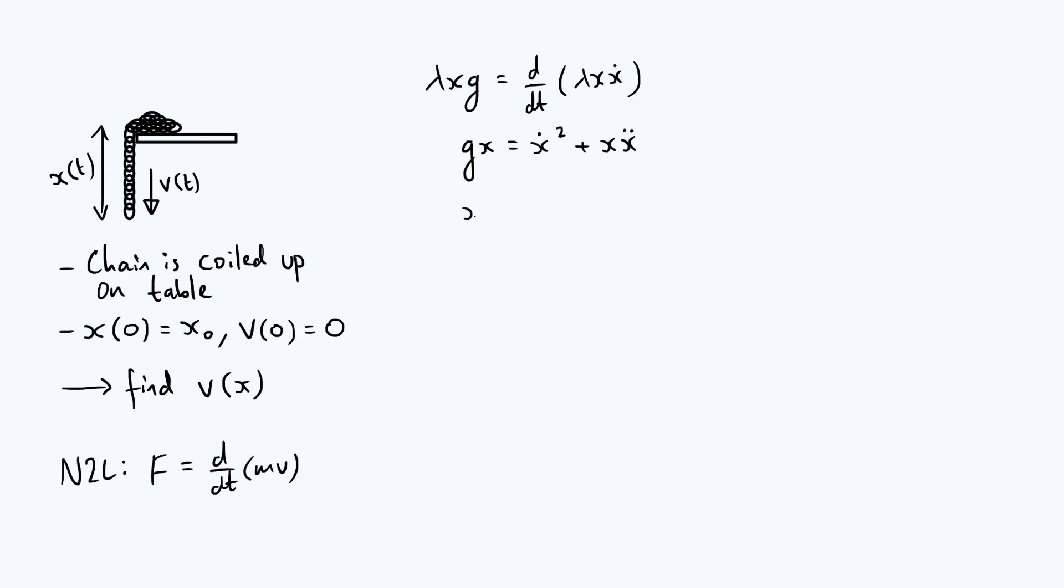So the trick I'm talking about involves the acceleration term, the ẍ. Now ẍ is the second derivative of x, or equivalently it's the first derivative of ẋ with respect to time. Now I'm going to apply the chain rule to that definition and write it as dẋ/dx and then times dx/dt, so that you can imagine the dx is cancelling. But dx/dt, this bit here, is just the same as ẋ, so you can write this as ẋ times dẋ/dx.